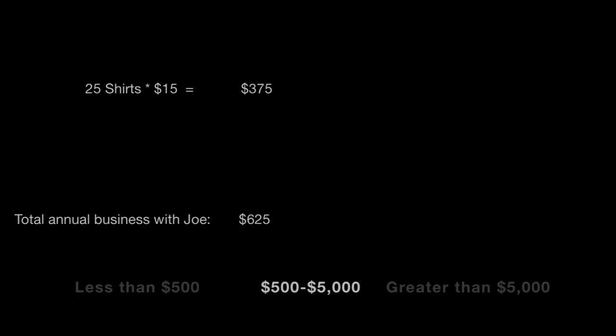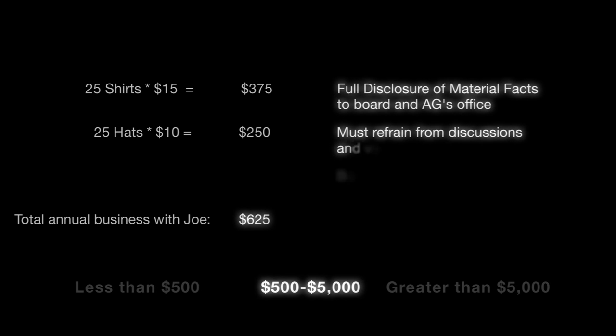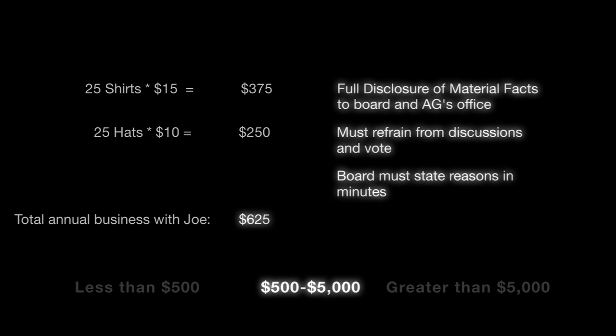But later, the Board decides they want to buy the kids hats for $10 each, so they go back to Joe. Now that the total annual business is over $500 with Joe, they must comply with the law. The transaction must be disclosed to the Board and the Attorney General. Joe can't participate in the talks on who to buy the hats from, and he definitely can't vote on the issue. Plus, now that the business for the year is over $500, Joe also has to report the shirt sales whenever he reports all conflict of interest transactions to the AG's office.